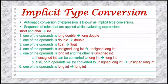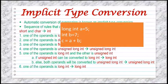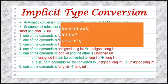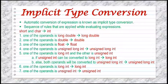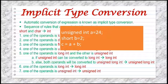Rule six: else if one of the operands is long int, the other will be converted to long int and the result will be long int. In the given example, variable a is declared as long int and variable b as int, so after calculation a plus b, the answer will be saved in long int. Additionally, if one of the operands is unsigned int, the other will be converted to unsigned int and the result will be unsigned int. In the example, a is declared as unsigned int and b as short, so a plus b will result in unsigned int.